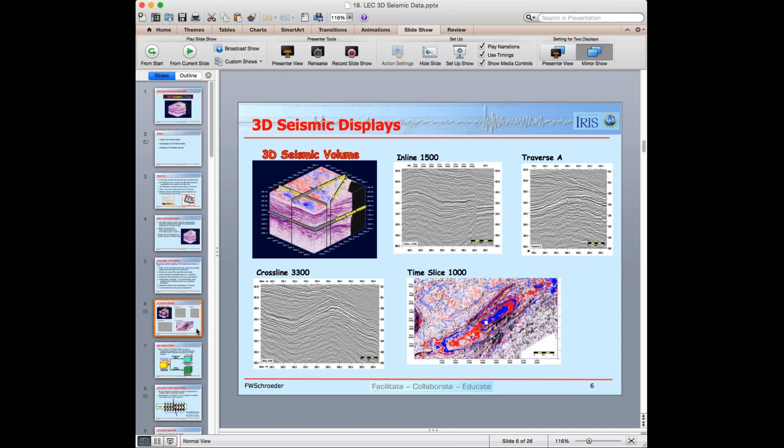So the next display, 3D seismic displays. The first image is a 3D volume. That's the one we've seen twice now. And then I click again, and it shows an inline, inline 1500. This runs roughly north on the left, south on the right. I click again, I see cross line 3300. West is on the left, east is on the right.